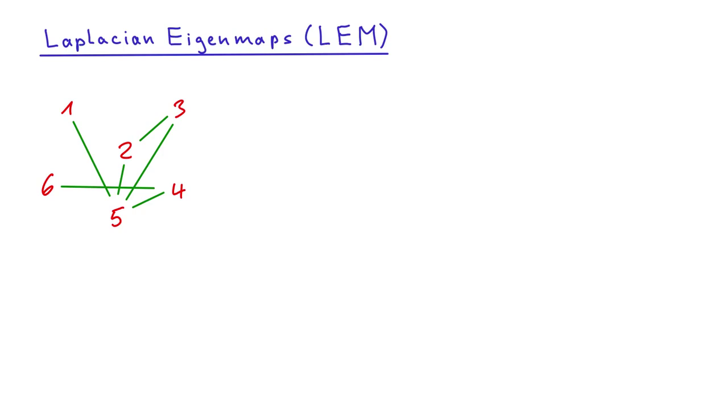If we consider the data items to be nodes and the similarities to be edges between the nodes, the data becomes a graph that we can represent by a matrix. In this case, it would be a six-by-six matrix with a one for each connected pair of nodes.